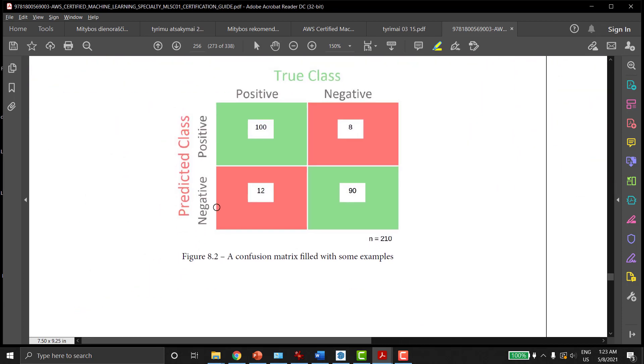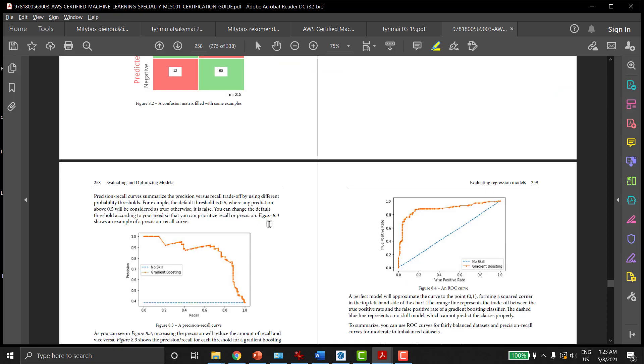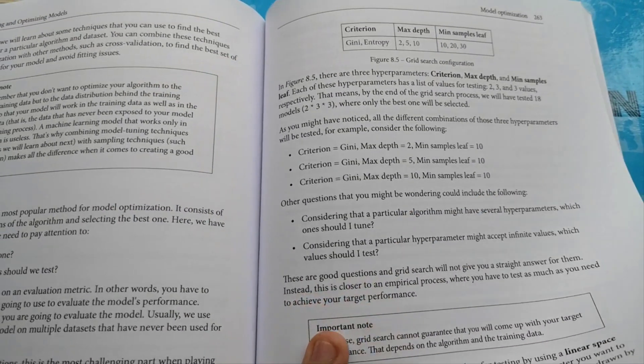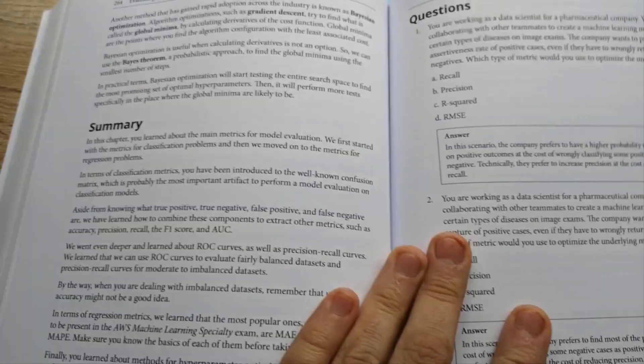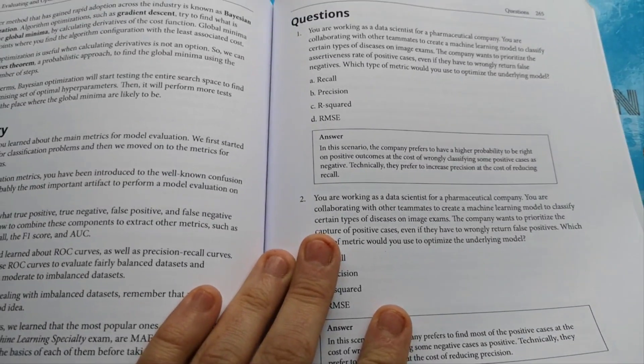During the exam, you will get a real-life situation and you need to select a correct answer with specified metrics which describe the problem the best. Or, you will get a confusion matrix and must to calculate one of these metrics just in brains without any calculator.